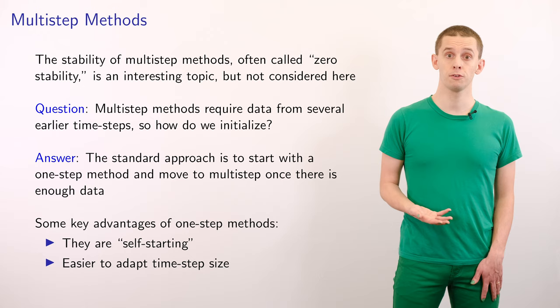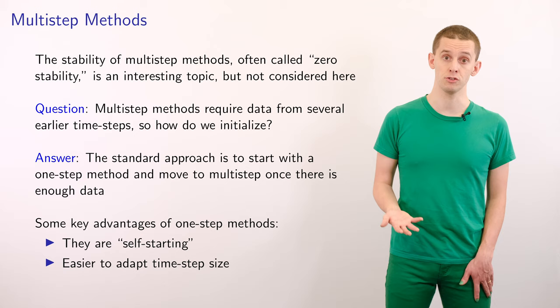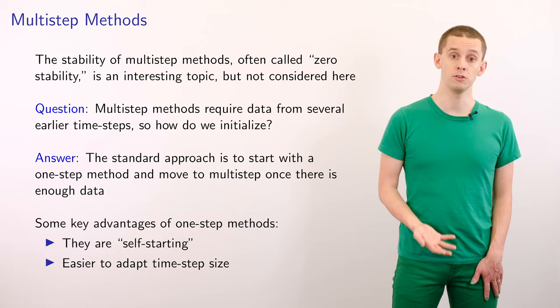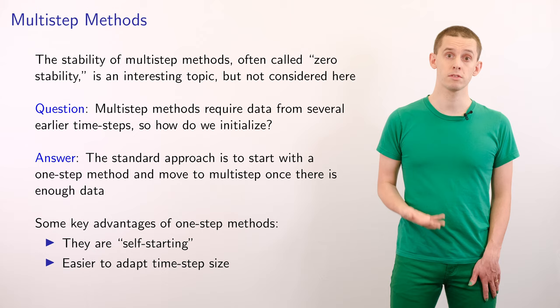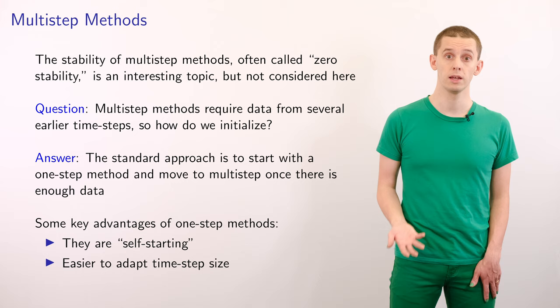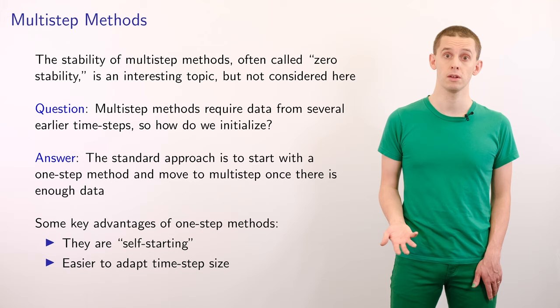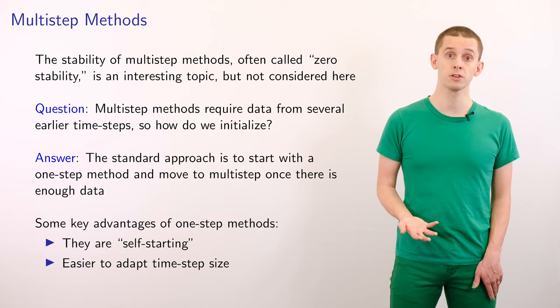However, there are key advantages with one-step methods. Firstly, we don't have the initialization problem and can immediately start. Second, one-step methods are easier to use with adaptive time-stepping — we can just choose a different time-step h at each step. With a multistep method the coefficients are dependent on the time-steps themselves, and standard Adams-Bashforth methods assume uniform time-steps. It is possible to generalize multistep methods for adaptive time-steps, but this makes them more complicated to implement.